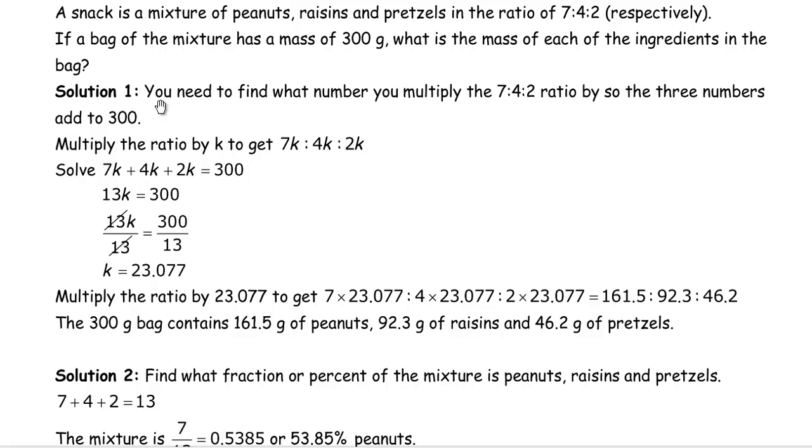The first one, what we need to do is find a number that we multiply the ratio by, because if you multiply every number in the ratio by the same number, then they stay in the same ratio. We need to find what number we multiply each of them by so that the three numbers add up to 300. So I'm going to call that number k. We're going to multiply 7, 4, and 2 by k, so the ratio becomes 7k, 4k, and 2k. And those three are going to add up to 300. Now 7k and 4k is 11k, plus 2k would be 13k, so this simplifies to 13k equals 300.